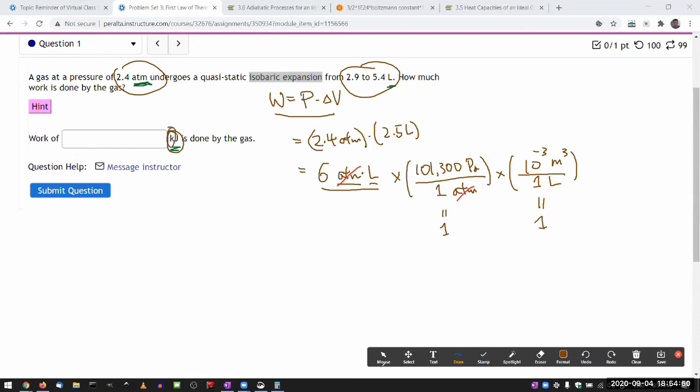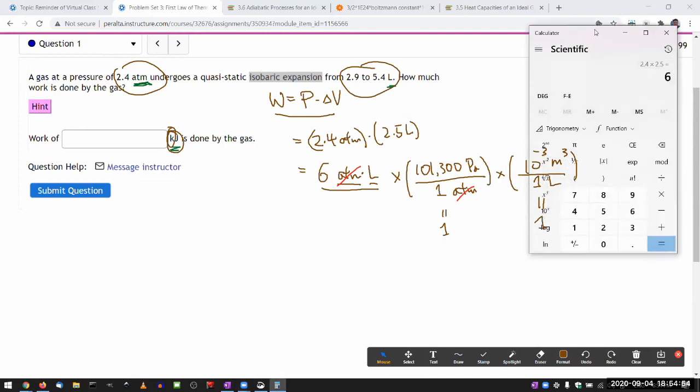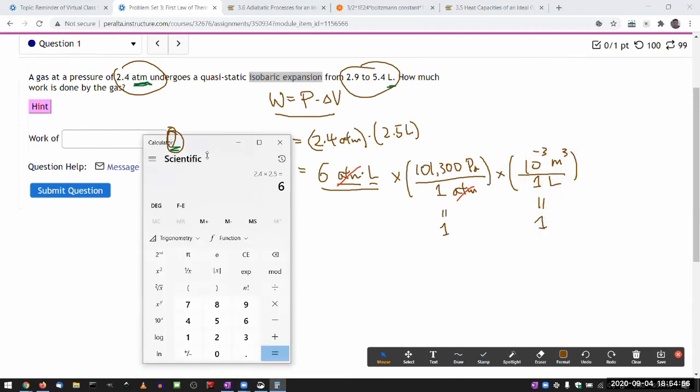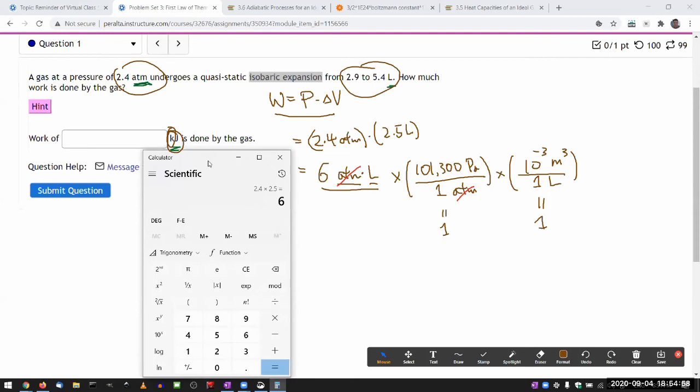That's doing it by hand, and that's something everyone should know how to do. If you need to practice, by all means practice. So six times 101,300 times 0.001, that's 10 to the power of minus three, equals that in joules.